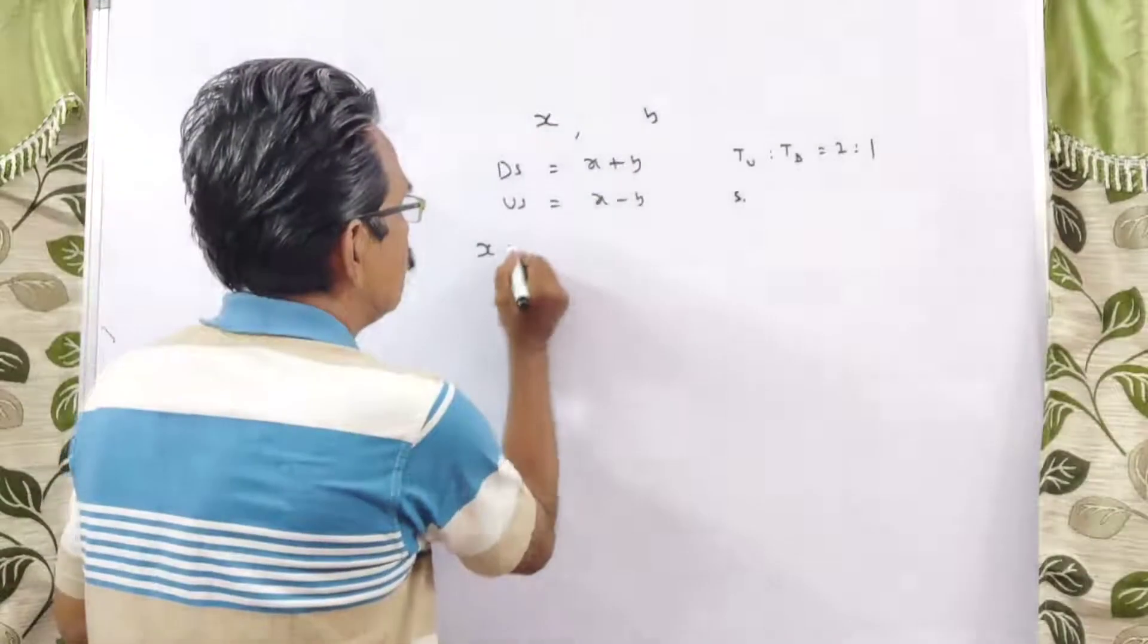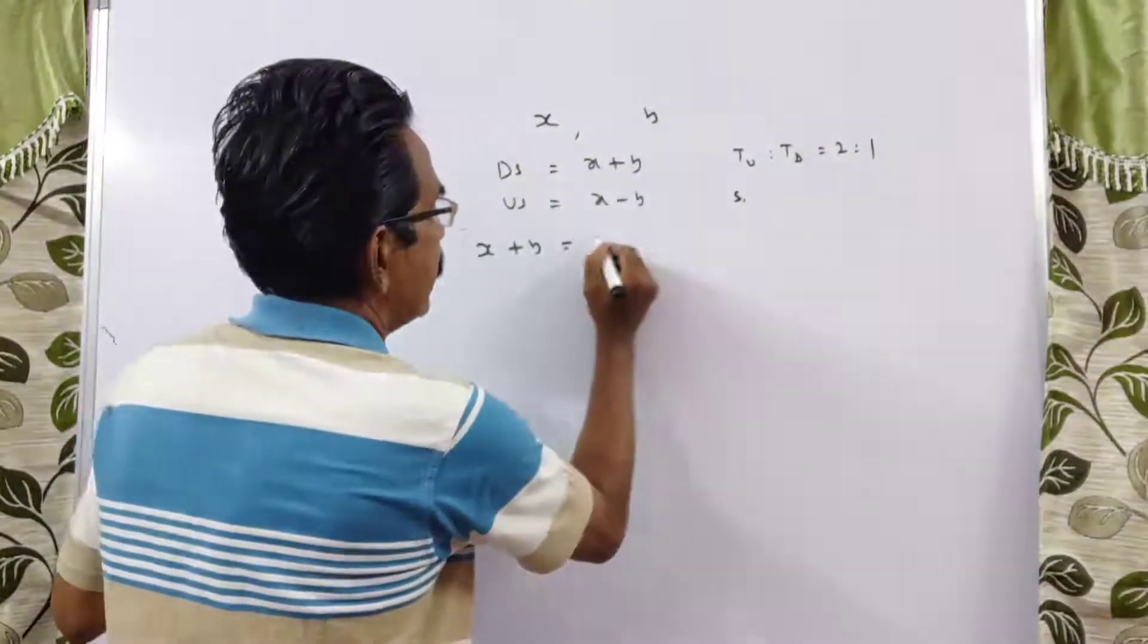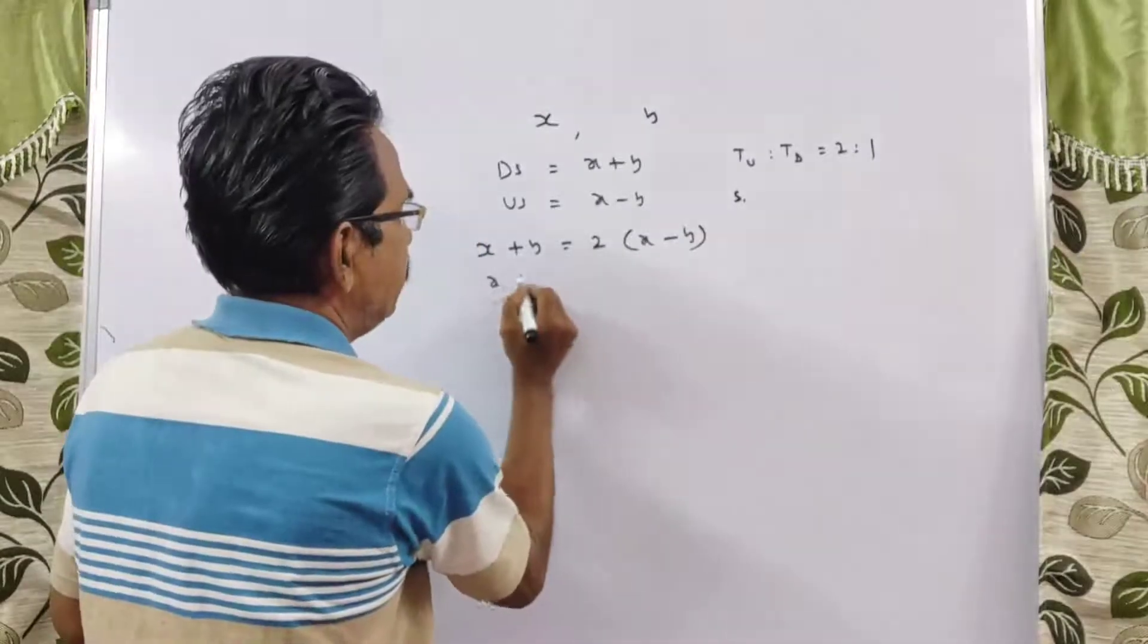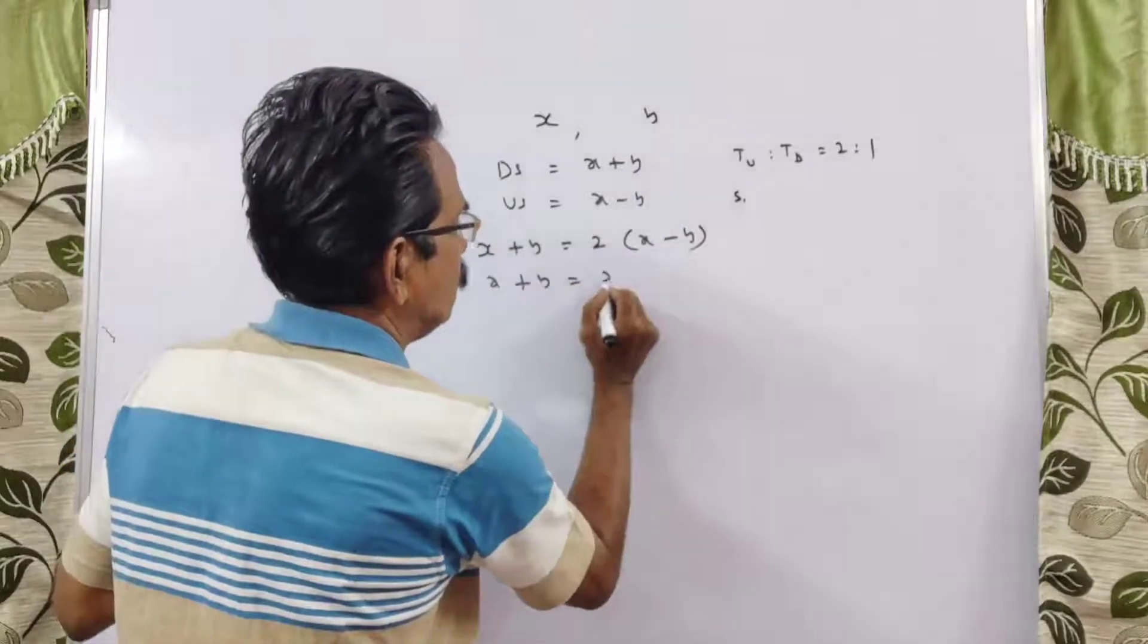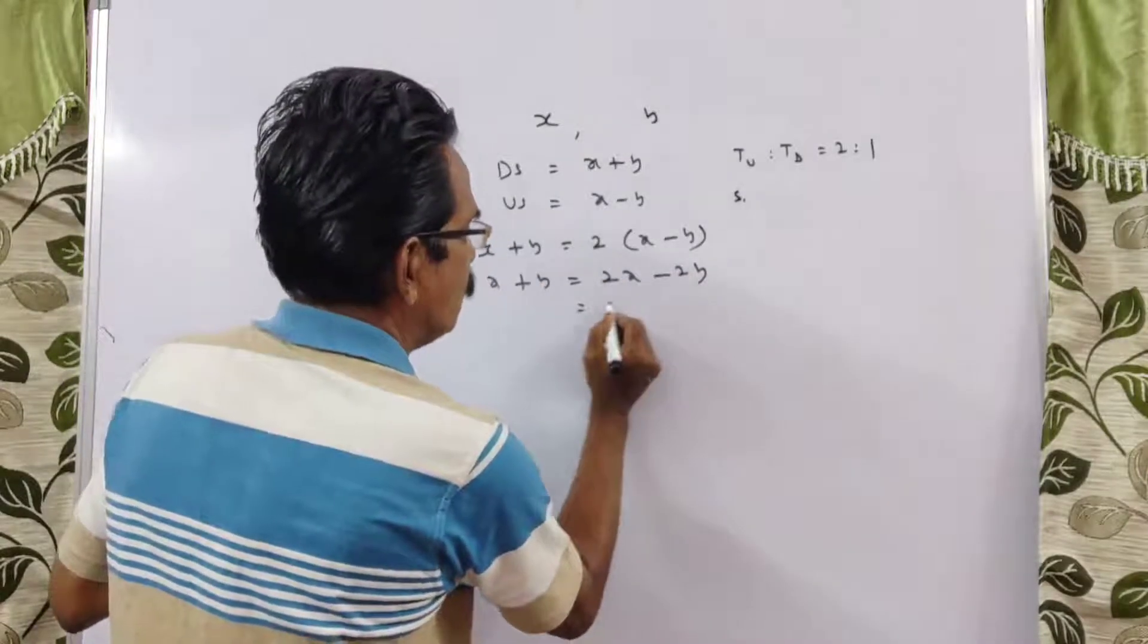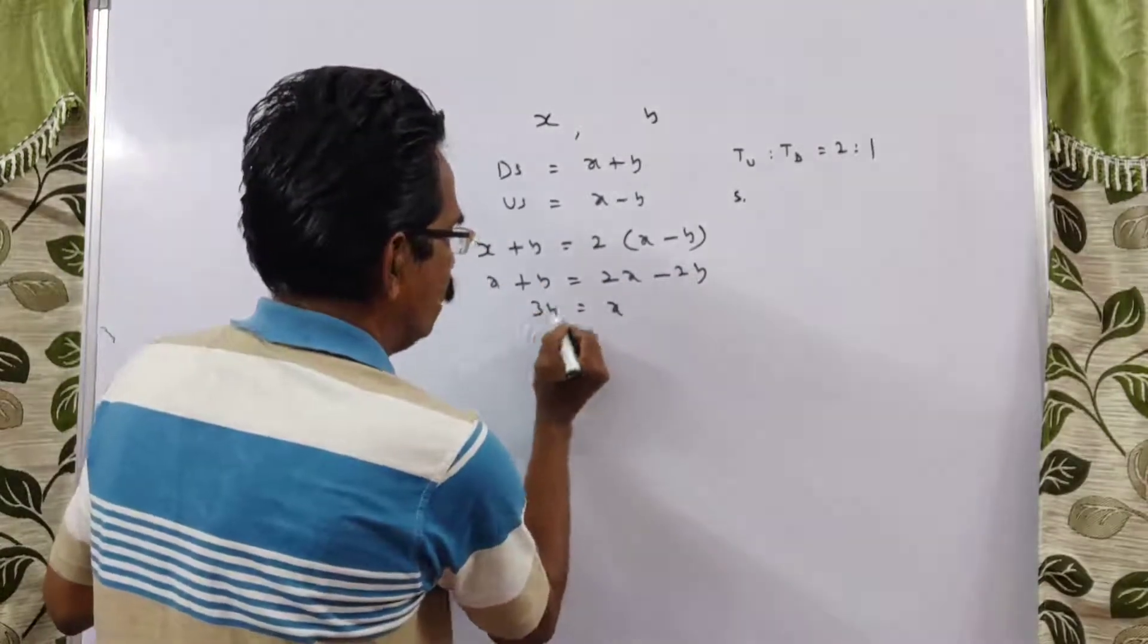Speed in downstream is twice the speed in upstream. This implies x plus y equals 2 times (x minus y), which simplifies to x equals 3y.